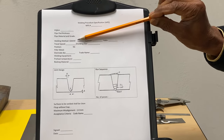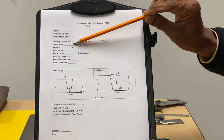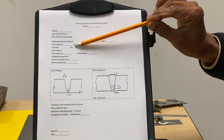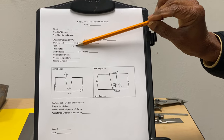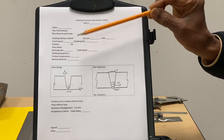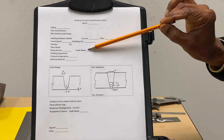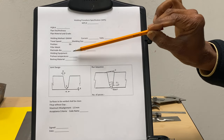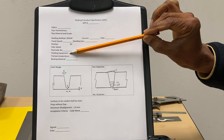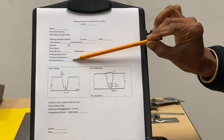In this case the welding method is GMAW. The WPS also specifies current, volts, travel speed, shielding gas, position — in this case welding position 5G — filler metal electrode diameter, say 1 mm, the trade name of the electrode, and then the welding equipment to be used, preheat temperature, and backing material.